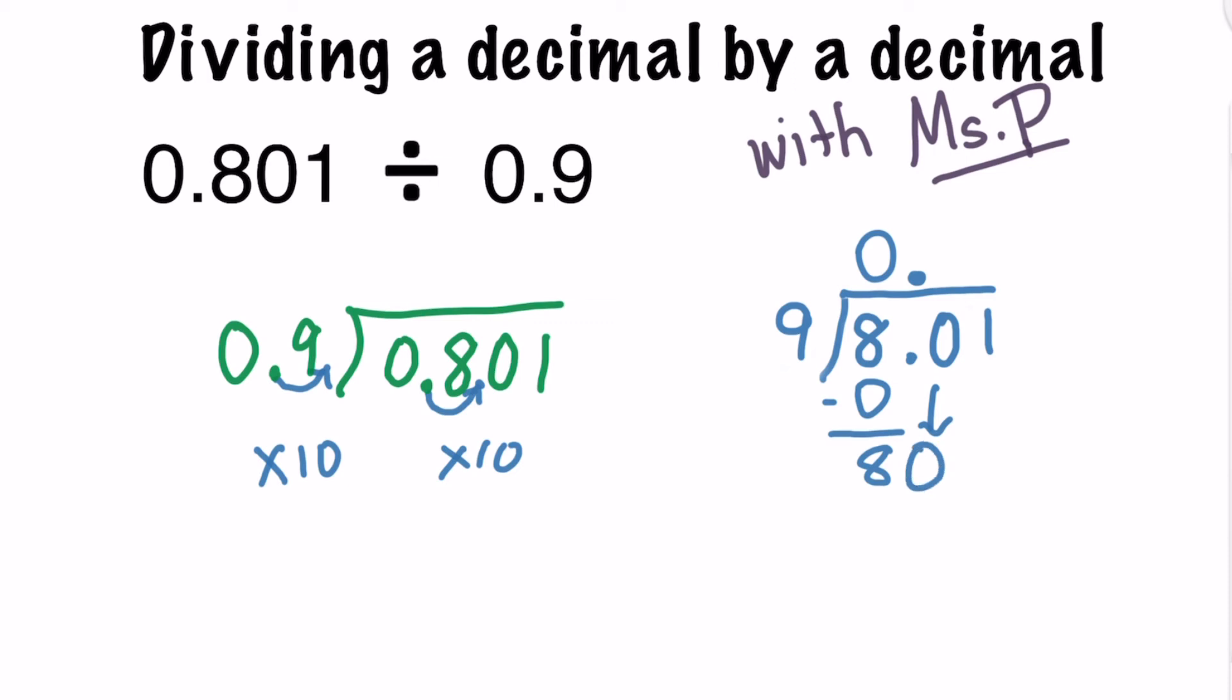We can then determine how many times does 9 go into 80? Well, if you know your 9 times tables, you know that 9 times 9 equals 81. And 81 is too big of a number for us here. We need a number that is smaller than 81. Since we know that 9 times 9 gives us 81 and that number is too big, we're going to have to determine that 9 goes into 80 eight times. So we'll put an 8 in the tenths place and then we'll multiply 9 times 8 which gives us 72.